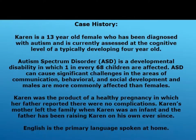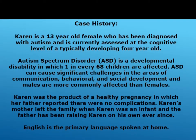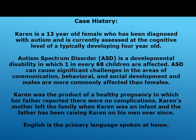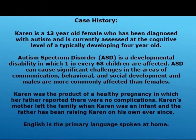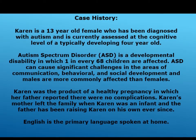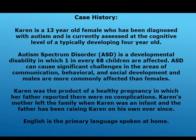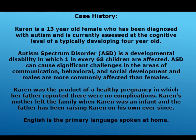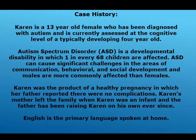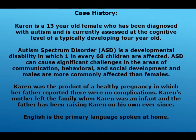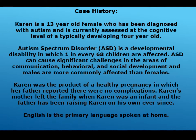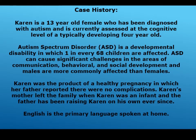Case history. Karen is a 13-year-old female who has been diagnosed with autism and is currently assessed at the cognitive level of a typically developing four-year-old. Autism spectrum disorder is a developmental disability in which one in every 68 children are affected. It can cause significant challenges in the areas of communication, behavioral, and social development, and males are more commonly affected than females.